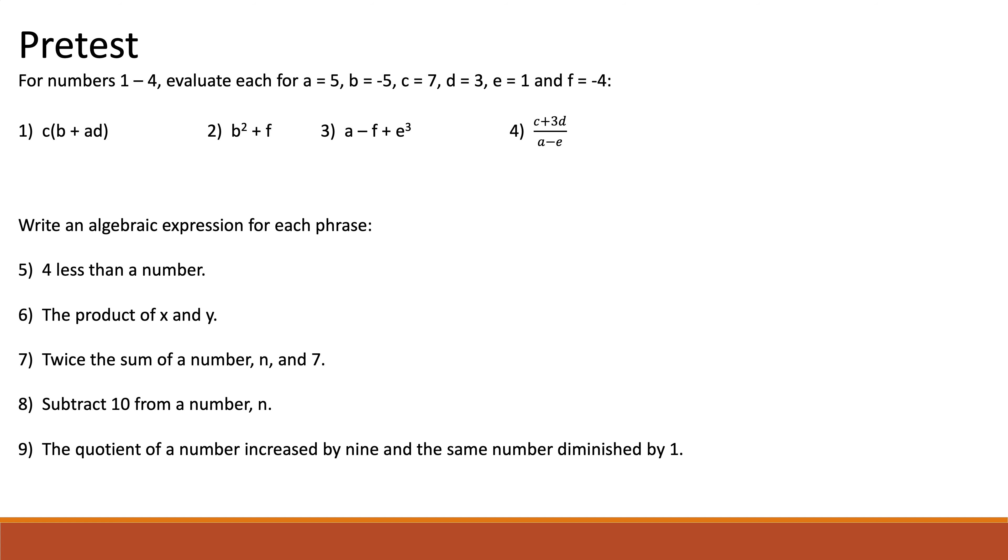You're going to work on this pre-test. So here's the deal - there's like 31 or maybe 32 questions, I think 31. And of these, 20 of them will find their way onto the test. The way I normally do it, I normally change the number of values. Like for example, it says for numbers 1 through 4, evaluate each if a is 5, b is negative 5, c is 7, blah blah blah. I might change c to 3, a to 8, b to negative 7, whatever I'm going to put in here.